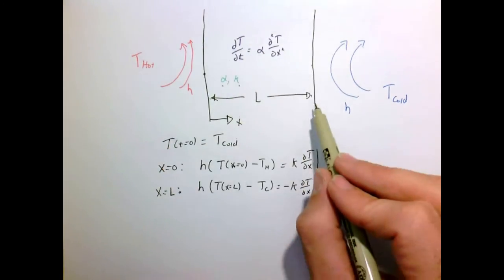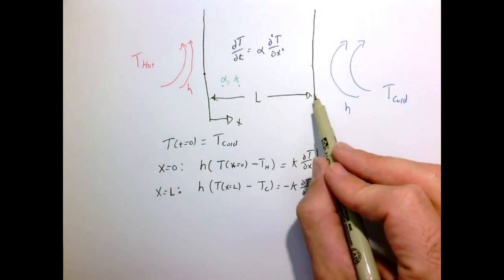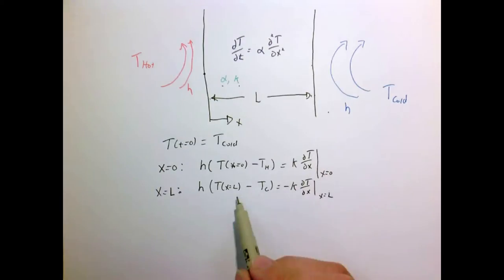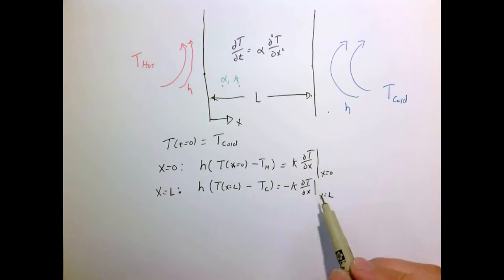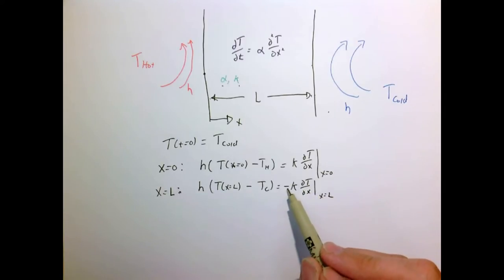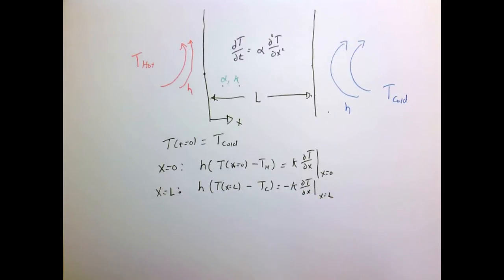At X equals L, we expect the wall temperature to be a little higher than the cold fluid temperature, so that term is positive. The temperature gradient is negative, and canceling that negative sign means the signs of the boundary condition at X equals L also look correct.